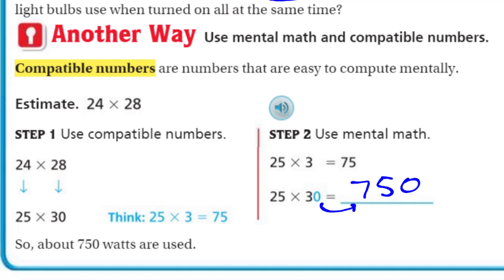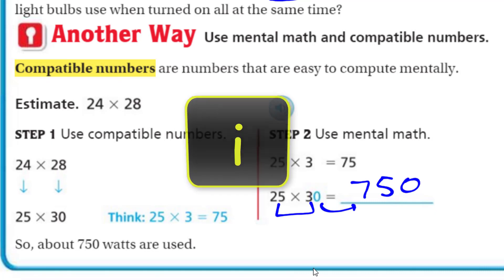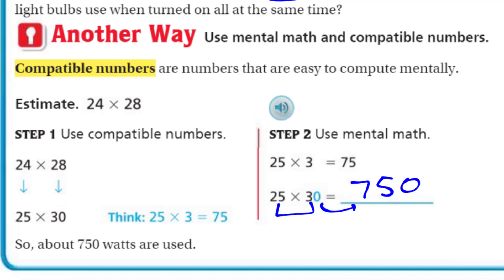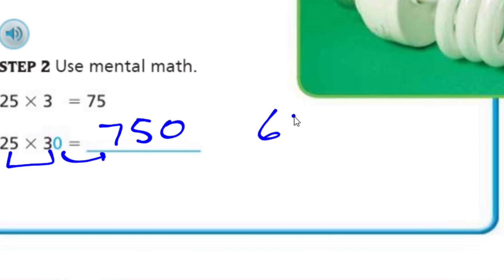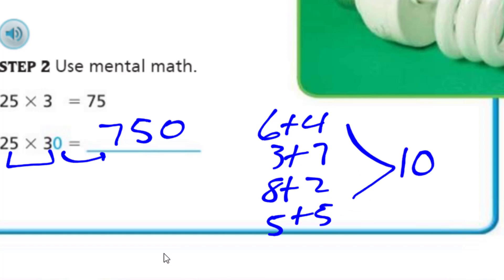Does that kind of make sense? We got that power of 10 that was added on. We're using simple facts. And for a lot of us, 25 times 3 is a simple fact. There's just certain numbers we consider to be compatible because they meet certain benchmark numbers. Like when you were in second grade and making numbers that were a 10. Compatible numbers? 6 plus 4. 3 plus 7. We always think of these numbers as being compatible. Now that you're in fourth grade, now we're looking at compatible numbers through multiplication.